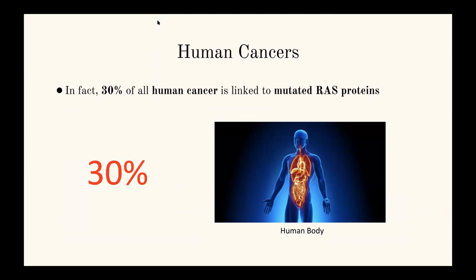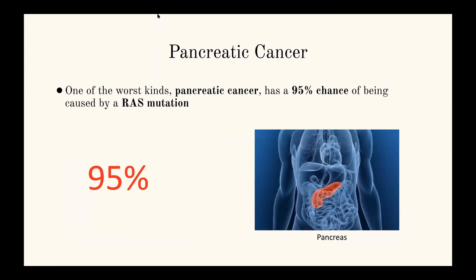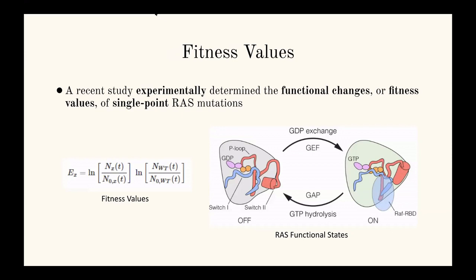In fact, 30% of all human cancers link to these mutated RAS proteins, and worse yet, 95% of pancreatic cancer is linked to this — and pancreatic cancer is especially one of the worst kinds of cancer symptomatically. The way this research study works reflects a common theme: research in any field builds off of each other, especially in computational biology, which in the past 15 years has seen an explosion of data ever since the human genome was mapped about 15 to 20 years ago.